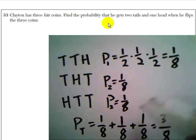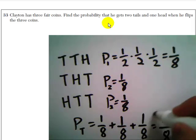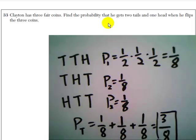So the probability of getting two tails and one head when he flips three coins is three eighths.